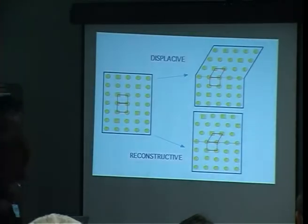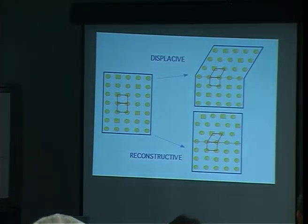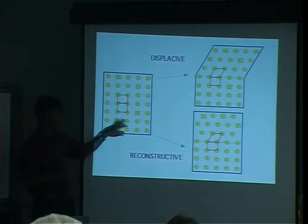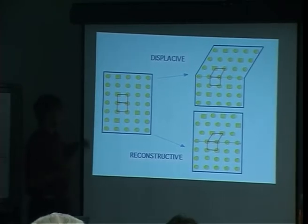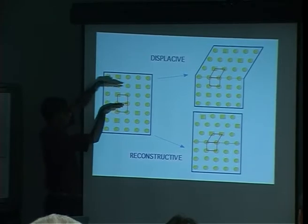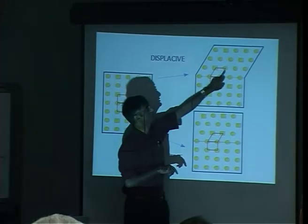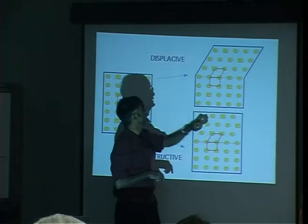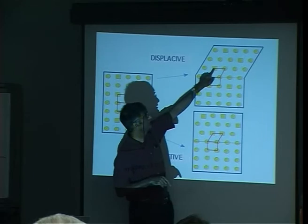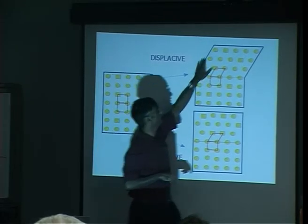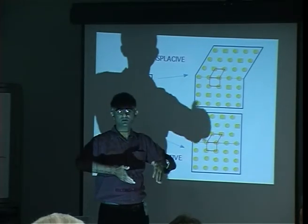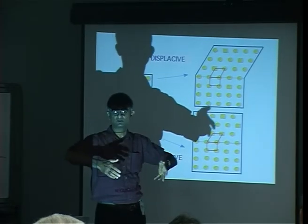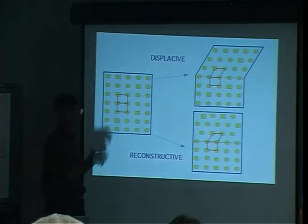To summarize the two different mechanisms: to get a displacive transformation, I simply deform this crystal into a different crystal structure. This is the new unit cell. If I generate the new pattern by a deformation, then the shape of the crystal will change — that's where the displacements observed using atomic force microscopy or interference microscopy come from. This is a physical deformation.